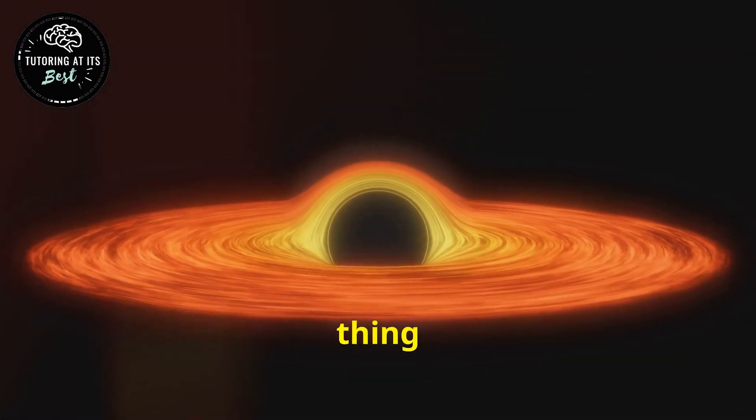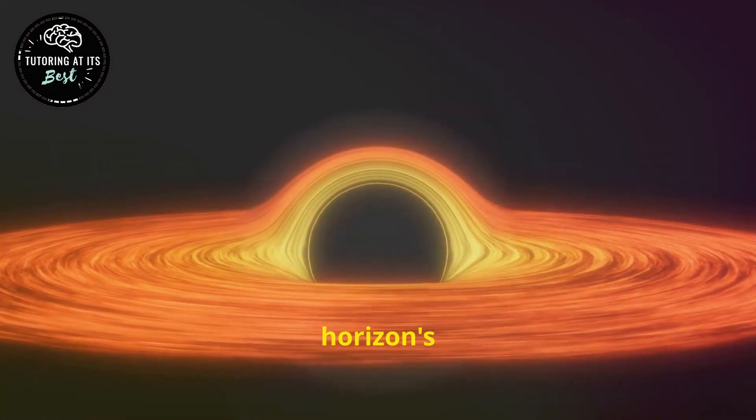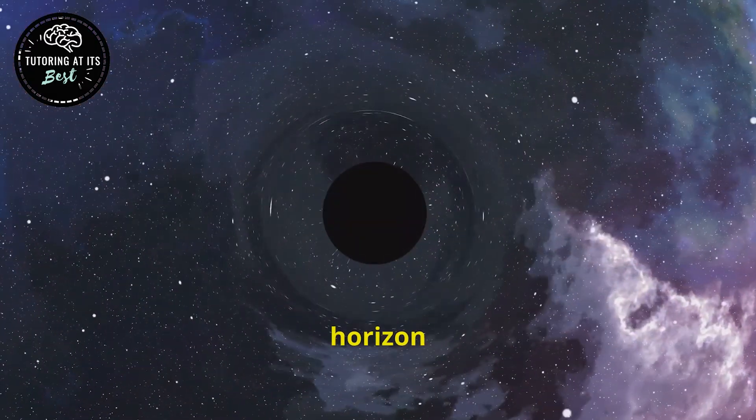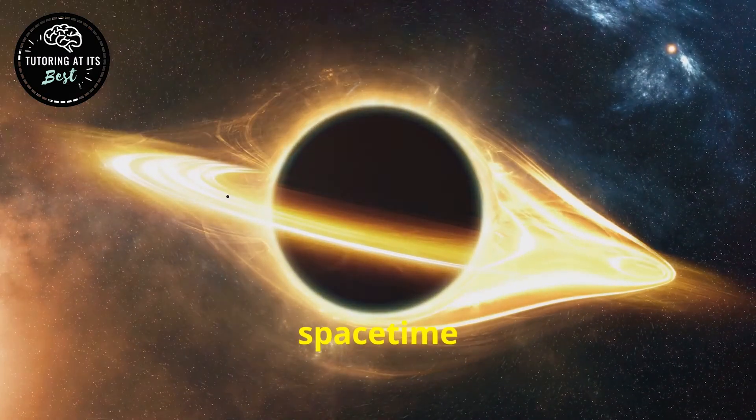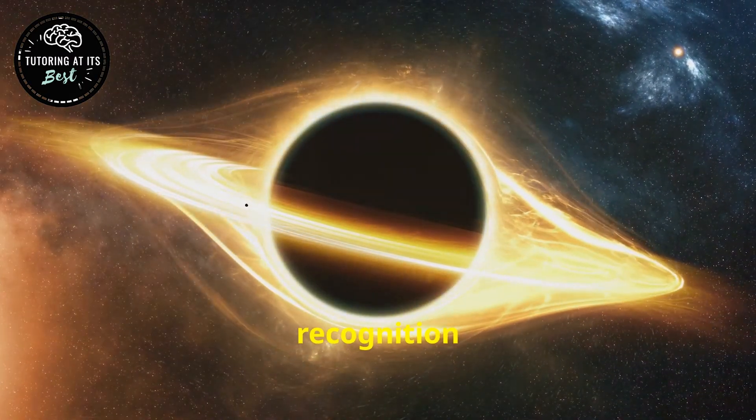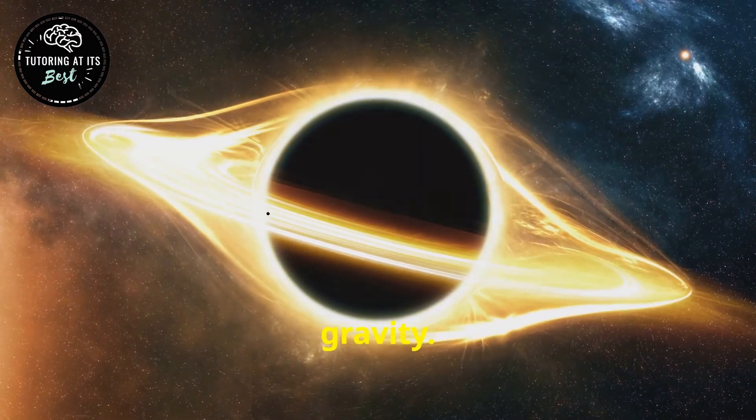Not even light, the fastest thing in the universe, can escape the event horizon's grasp. The event horizon is not a physical surface. It's not a solid barrier you can touch. Instead, it's a region of space-time warped beyond recognition by the black hole's immense gravity.